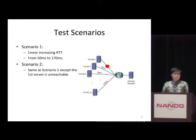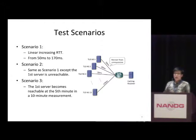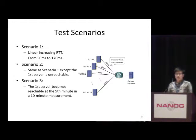In the second scenario, we want to see if the cache resolver can detect the unresponsive name server and avoid sending queries to that one. So in this scenario, the first name server is unresponsive. In the third scenario, we want to see if the cache resolver can detect the recovery of those unresponsive name servers. So in this scenario, the first name server is unresponsive at the beginning, but it comes back after five minutes.